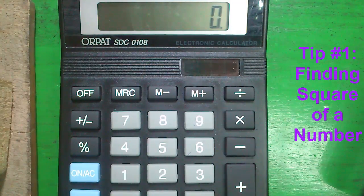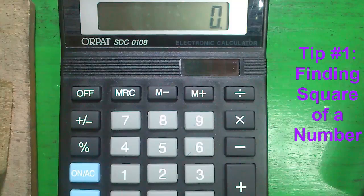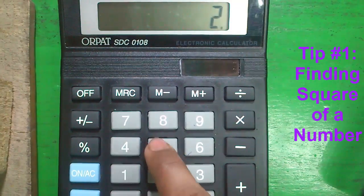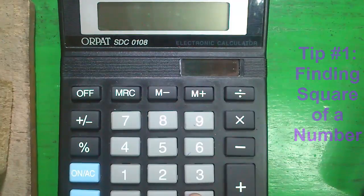Tip number 1, finding square of a number. To find out square of a number, enter the number and press multiply and then the equals button.